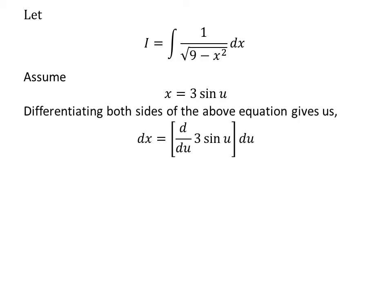Let us find the value of differential of x in terms of u. Taking the differential of both sides gives us differential of x is equal to the derivative of 3 times sine of u with respect to u, times differential of u. We know the derivative of sine of u is cosine of u, so differential of x is equal to 3 times cosine of u times differential of u.